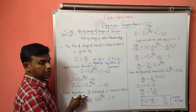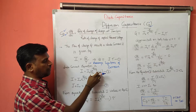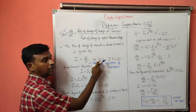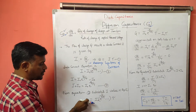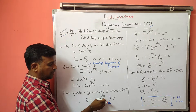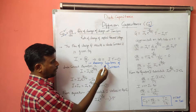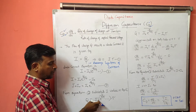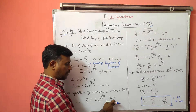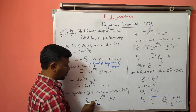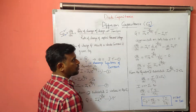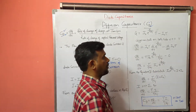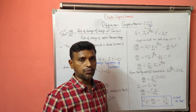From equation 2, I = I₀(e^(V/ηVT) − 1), substituting this I value into equation 1 to calculate the total charge: Q = I₀(e^(V/ηVT) − 1)·τ. Taking I₀ and τ into the bracket: Q = I₀·τ·e^(V/ηVT) − I₀·τ. What we require here is the rate of change of charge with respect to the applied voltage.